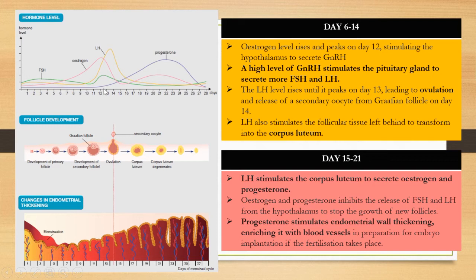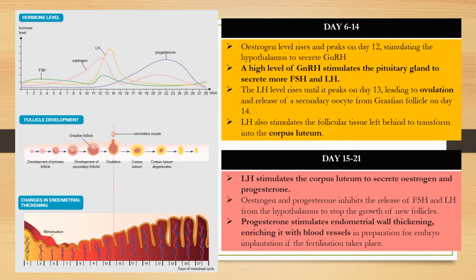Now we move to Day 6 to Day 14. On the graph, we can see follicle development and changes in the endometrium wall during this period. The estrogen level rises starting from Day 6, peaks on Day 12, and stimulates the hypothalamus to secrete GnRH. The high level of GnRH then stimulates the pituitary gland to release more FSH and LH.